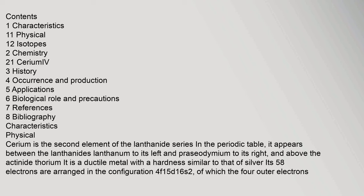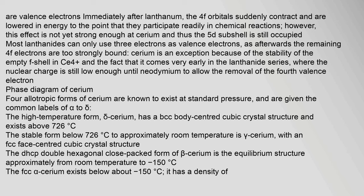In the periodic table, cerium appears between the lanthanides lanthanum to its left and praseodymium to its right, and above the actinide thorium. It is a ductile metal with a hardness similar to that of silver. Its 58 electrons are arranged in the configuration 4F1 5d1 6s2, of which the four outer electrons are valence electrons. Immediately after lanthanum, the 4F orbitals suddenly contract and are lowered in energy to the point that they participate readily in chemical reactions.